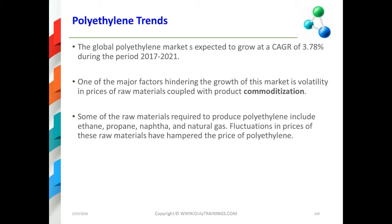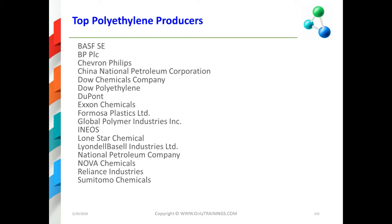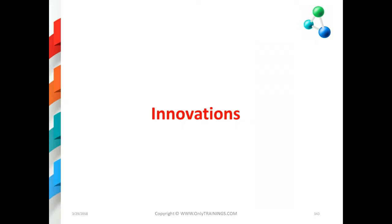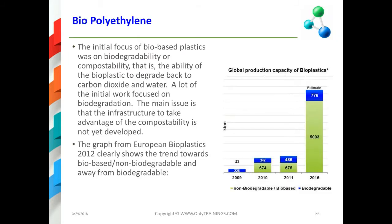Some of the raw materials used to produce polyethylene include ethane, propane, naphtha, and natural gas. Fluctuations in these raw materials have hampered polyethylene pricing. Polyethylene also competes against polypropylene, which tends to be a lower-cost material. There are a number of polyethylene producers worldwide — it truly is a global market, with polyethylene moving from North America to Asia, Europe, and South America.